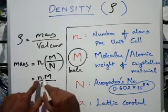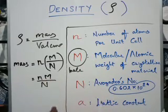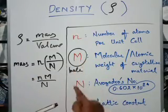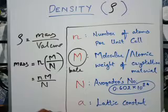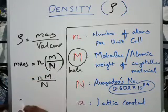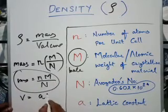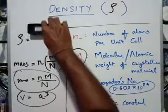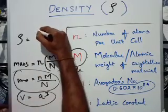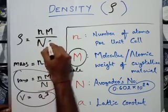The number of atoms per unit cell — one atom weight into number of atoms gives the mass of the unit cell. One unit cell volume is equal to a³. So the density formula becomes: rho equals n times m divided by capital N times a cubed.